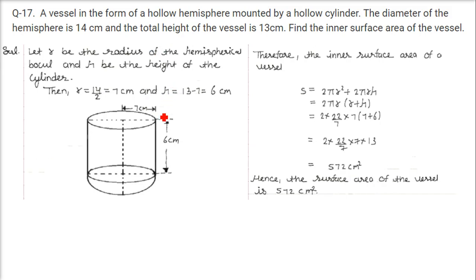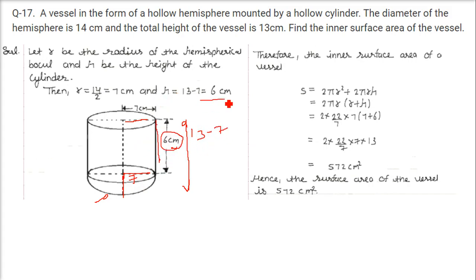A vessel is a hollow cylinder mounted with a hollow hemisphere. The diameter of the hemisphere is 14 cm, giving radius 7. The total height of the vessel is 13 cm. The height of the cylindrical portion is 13 − 7 = 6 cm. The inner surface area = 2πr² (hemisphere) + 2πrh (cylinder) with r = 7 and h = 6, giving 572 cm².